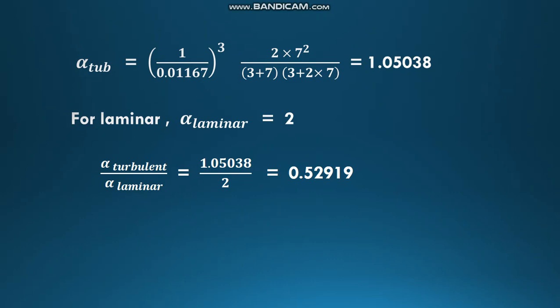For laminar flow, α_laminar is mentioned as 2. Calculating the ratio, α_turbulent/α_laminar equals 0.52519.